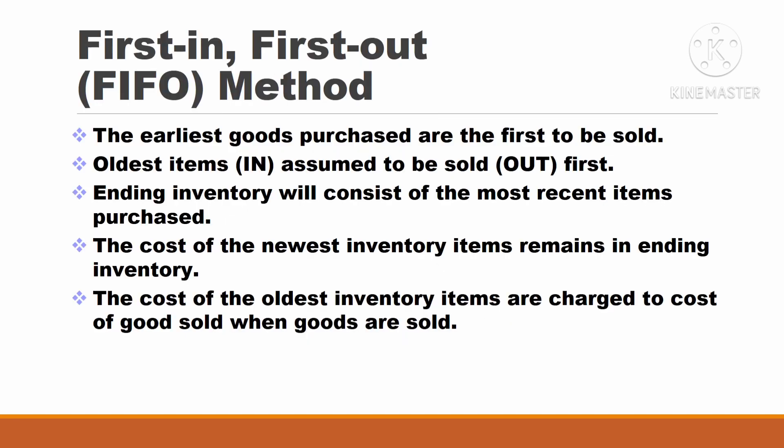The first method is the FIFO method, or First-In First-Out method. It means that the earliest goods purchased are the first to be sold — the oldest item is assumed to be sold first. The ending inventory will consist of the most recently purchased items. The cost of the newest inventory items remains in the ending inventory, and the cost of the oldest inventory items are charged to cost of goods sold when goods are sold.